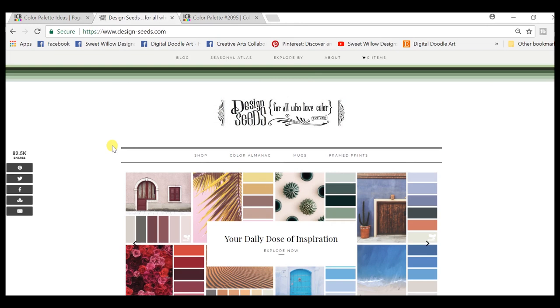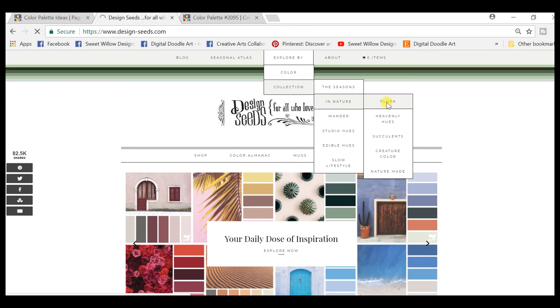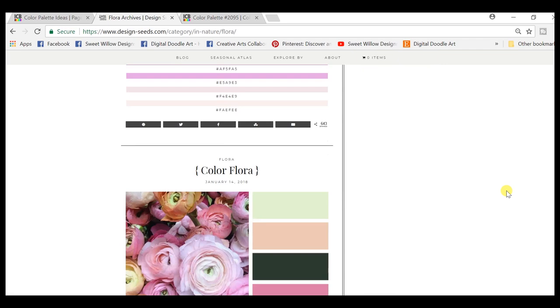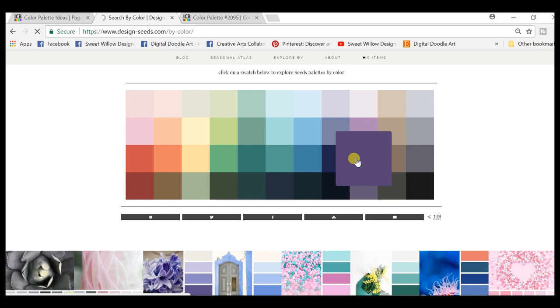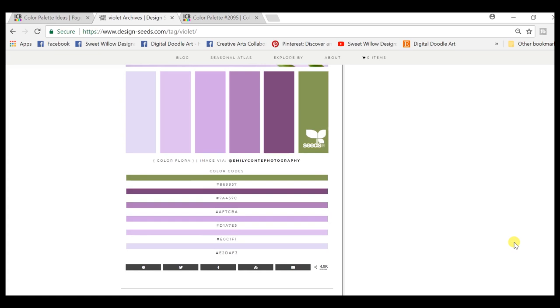The second one is called Design Seeds. It's just a beautiful, beautiful site. Great photographs and they've taken those photographs and converted them to a series of color palettes and you can easily match your paint or mix paints. On this particular site you can choose by color, by collection. Here's what it would look like if you were to choose a color. This is violet and you can just go in and see all the beautiful combinations of colors that you can use.